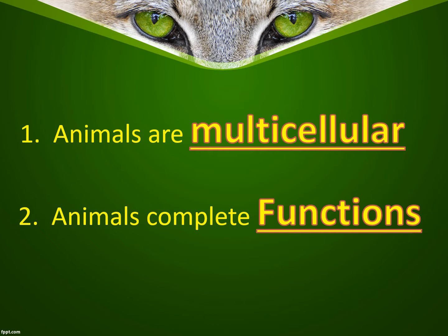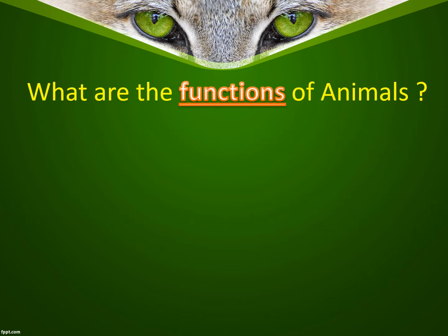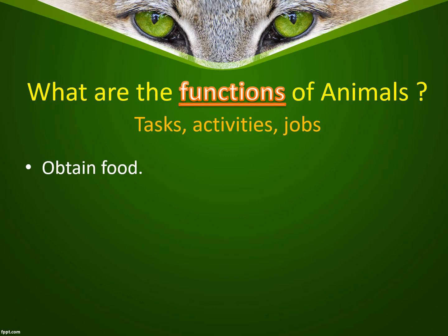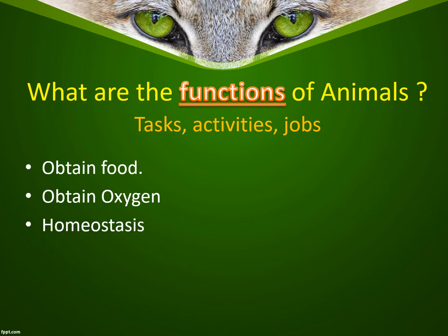The second thing to remember about animals and all living things is that animals have to complete functions — tasks or life characteristics. Some of those functions include: first, obtaining food — they have to find nourishment and fuel, because just like a car, if they run out of gas they will cease to live. Next, they have to get oxygen; if they're not breathing, they're going to die as well.